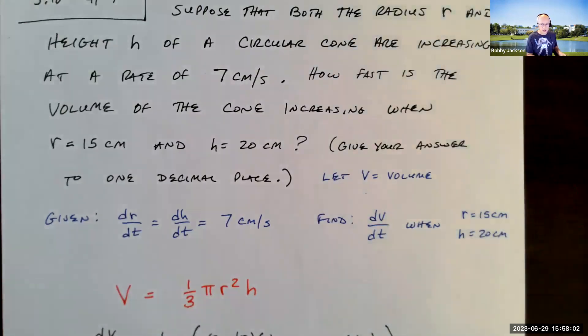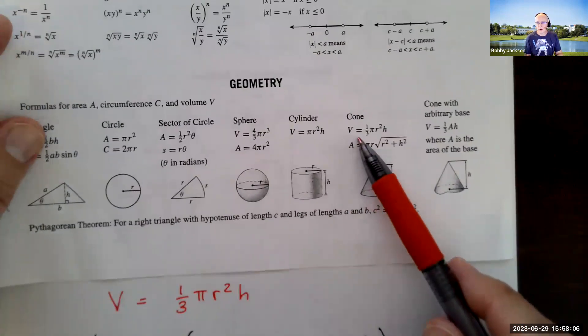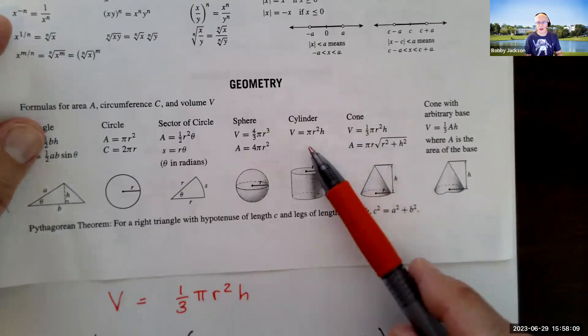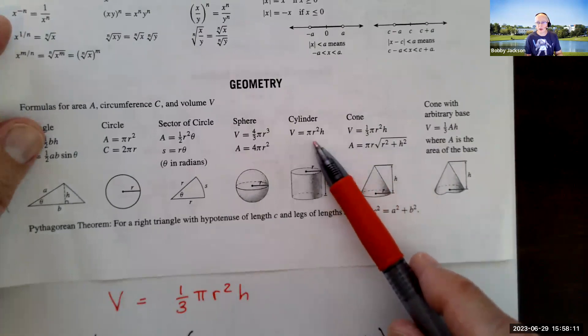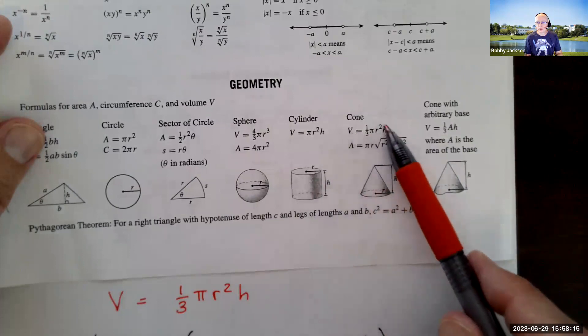Now, on the help sheet that I give you on the test, you will find the volume of a cone formula right here. It's actually one-third the volume of a corresponding cylinder with the same radius and height. But there it is.